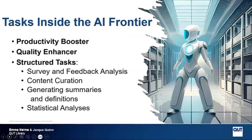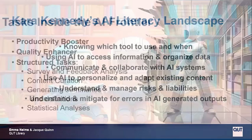What are the skills inside the actual frontier? AI can enhance productivity by handling more tasks faster. AI improves the quality of work, especially for below-average skill levels. It excels in highly structured tasks with clear instructions and outputs — survey and feedback analysis, for example, where it can identify common themes, sentiments and patterns. Content curation: gathering content from large data sets based on specific objectives. Generating summaries and definitions, and statistical analysis — performing complex analysis quickly and accurately, such as text analysis or pattern recognition.